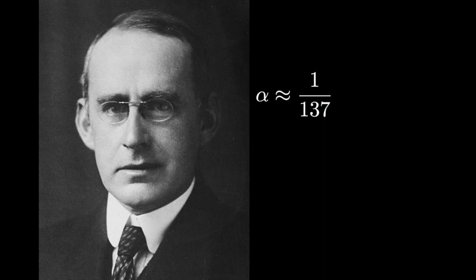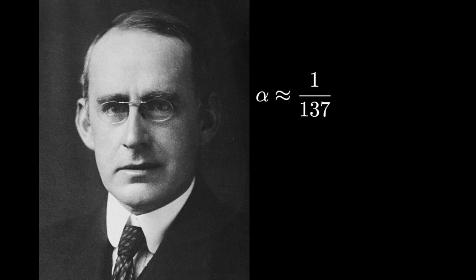One of the interesting things about the fine structure constant is that, unlike capital G, it doesn't depend on what units you're using — you can combine constants together to make dimensionless constants, and alpha, the fine structure constant, is one of these: 1 over 137. The first measurements actually looked like it was exactly 1 over 136, and so Eddington directed all of his numerological efforts at 1 over 136. Then a better measurement showed it was 1 over 137, and some wag called him 'Arthur adding one.' Now 137 was the magic number to aim for — though as we know, it's not exactly 137, it's 137.05-something, so it's not quite a whole number.